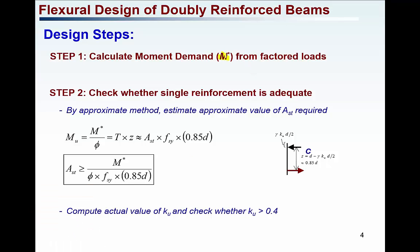Using the approximate method, you can find out what area of steel is required for the given B and D to take M*. To use the approximate method, we assume the lever arm Z — the distance between the compression force and the tension force — to be approximately 0.85D. With that assumption, we can roughly estimate the tensile steel area required for the given moment. The moment capacity is the tensile force multiplied by the lever arm Z, so the area of steel required is estimated from that equation.